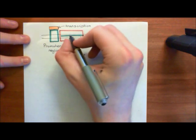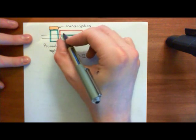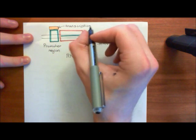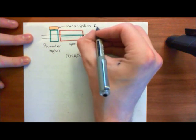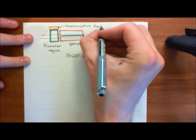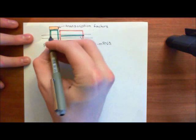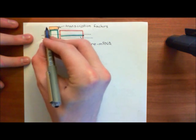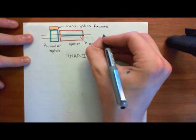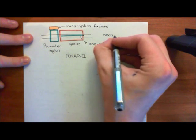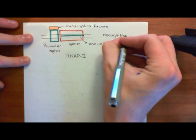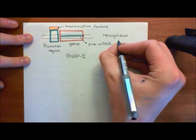They won't just do this for one promoter region of one gene. They'll bind to loads of different promoter regions, because loads of promoter regions will have this same sequence of organic bases which they specifically recognize and bind to. That sequence of organic bases which the transcription factor binds to is what's known as a recognition sequence.